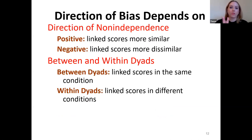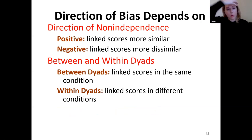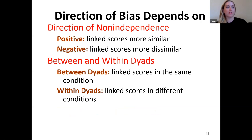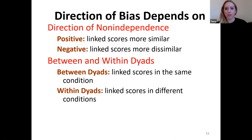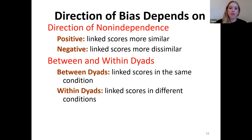When you violate non-independence assumptions, it's not clear exactly what the consequence will be. Sometimes there's no consequence; sometimes your p-values are too small and sometimes too large. The direction of the bias depends largely on the direction of non-independence — if it's positive, the linked scores are more similar; if negative, they're more dissimilar. It's certainly possible to have a negative correlation between two people, like in a chess game where there's a winner and a loser whose satisfaction scores would be negatively correlated.